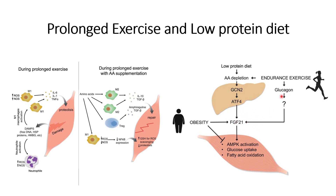Endurance exercise will also lead to amino acid depletion or low protein diet conditions, triggering similar pathways that ultimately lead to loss of muscle mass. In order to avoid such conditions, one should have an adequate amount of protein in their diet so that muscle mass is maintained along with endurance exercise or resistance exercise.